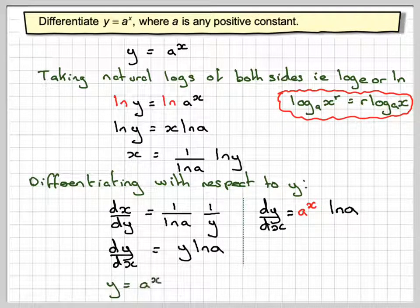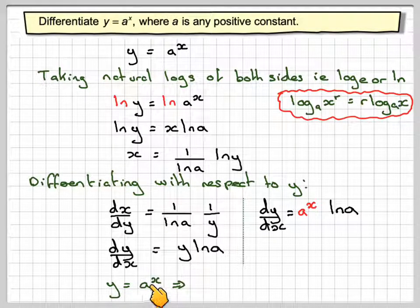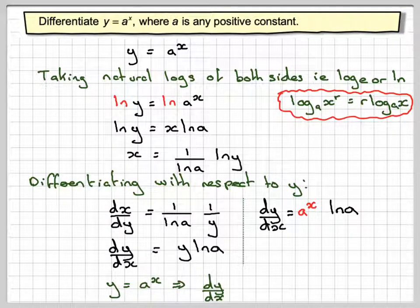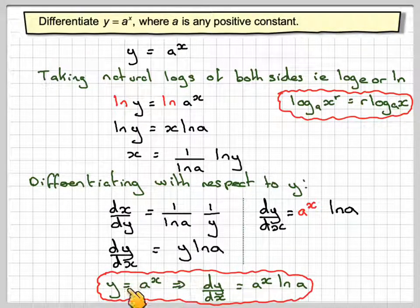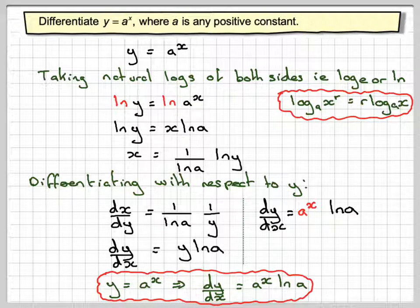So here we now have another general rule that says if y is equal to a to the x, it means that dy by dx will be equal to a to the x ln of a. And this is a rule that you can just quote. So this has been a video to show you how to differentiate a to the x, where a is any positive constant.